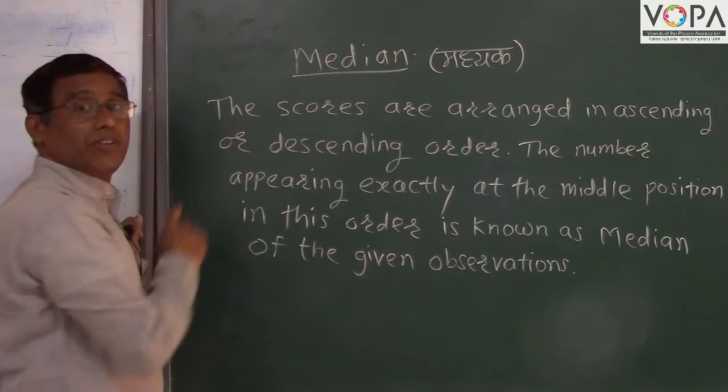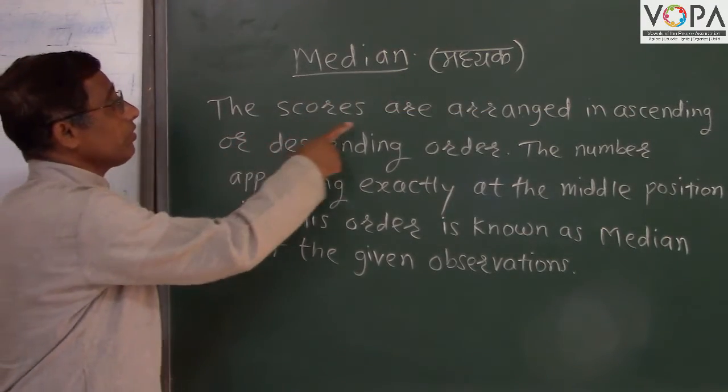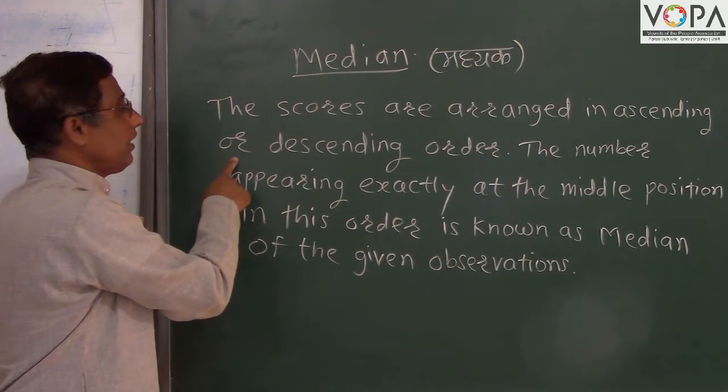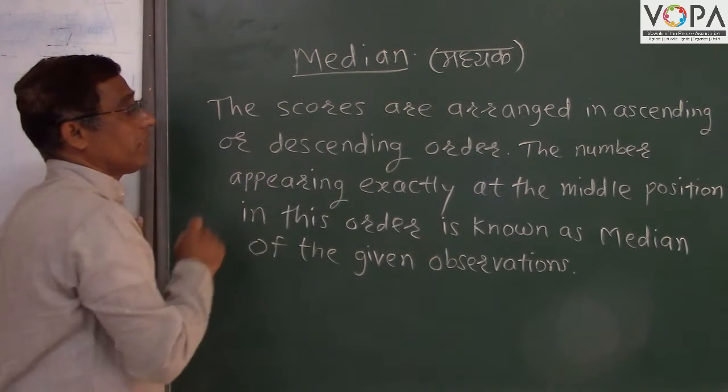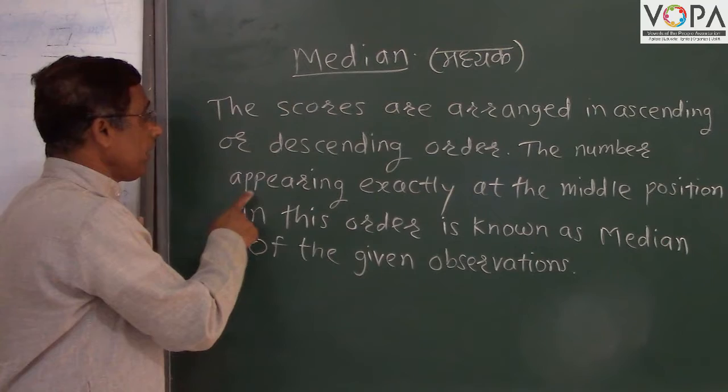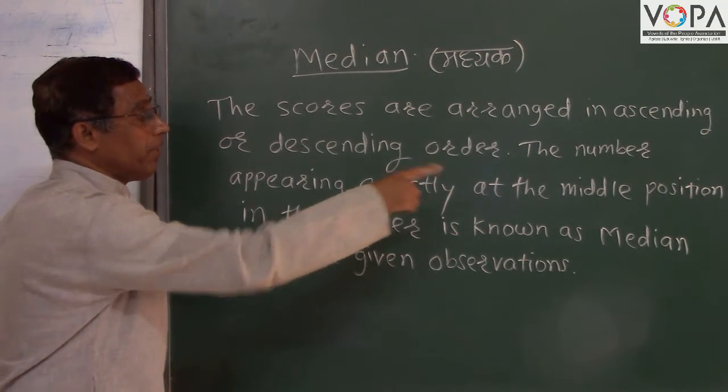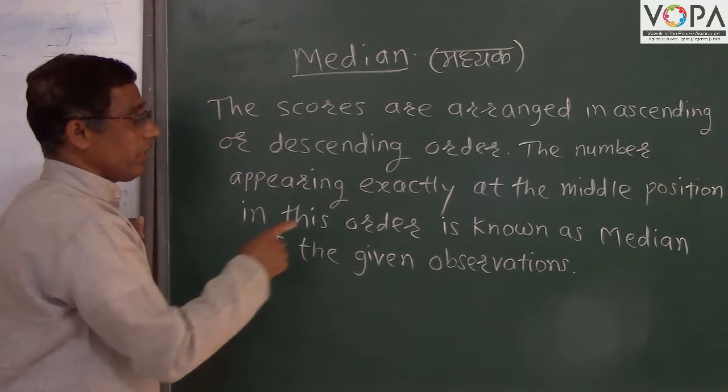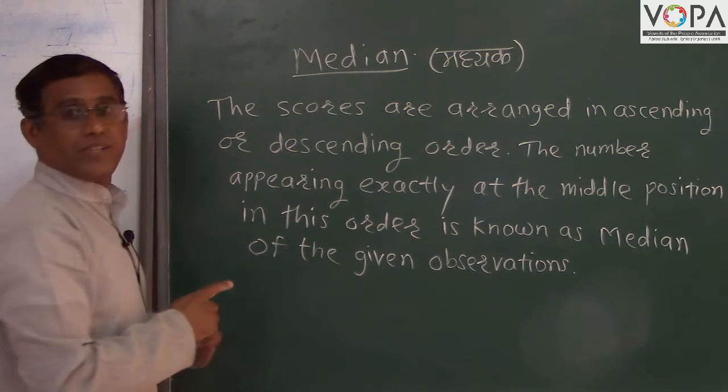Median, in Marathi called Madhyak, is found by arranging scores in descending or ascending order. The number appearing exactly at the middle position in this order is known as the median of the given observations.